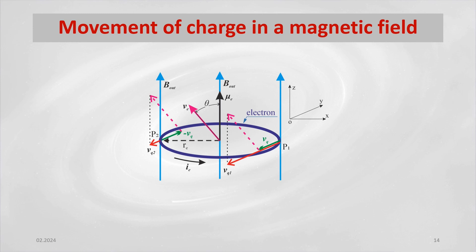However, if the model of the free electron moves in the external homogeneous magnetic field b with velocity v, the vector of which forms an angle theta with the external magnetic field vector b, then the charge q of the electron model, which creates the current i, will move unevenly with respect to the external magnetic field, so that on one side at point p1 its velocity will always be greater than the velocity on the opposite side of the toroid at point p2.